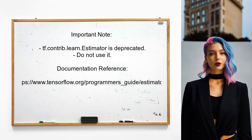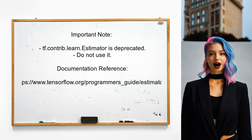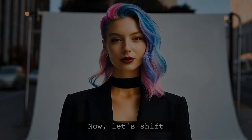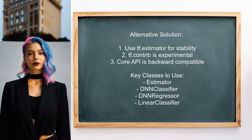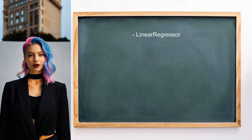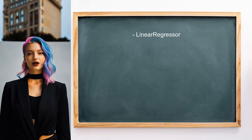One user points out that the TensorFlow documentation explicitly states that tf.contrib.learn.estimator is deprecated and should not be used. They emphasize that while this is noted in the documentation, it isn't marked as deprecated in the code itself. Another response highlights the distinction between tf.estimator and tf.contrib.learn: the core API is stable and backward compatible, while contrib is more experimental and may change. For classes available in both, like Estimator and DNNRegressor, it's best to use the core version to avoid deprecation issues.